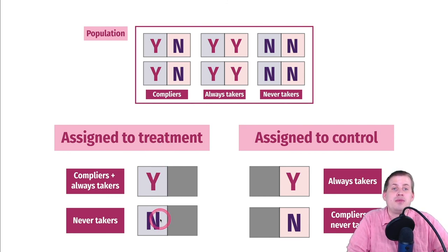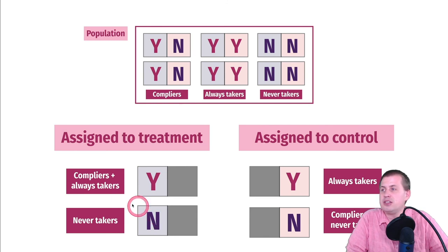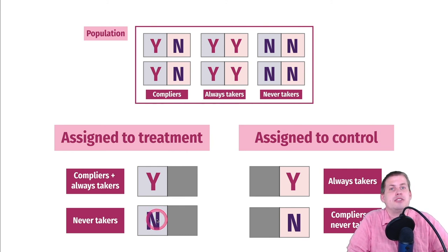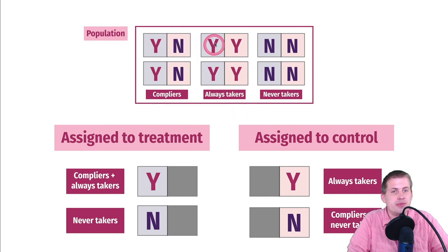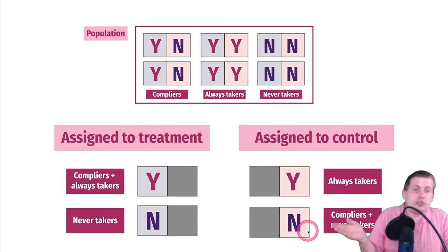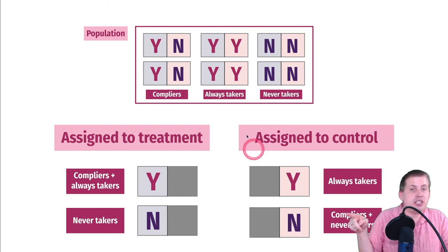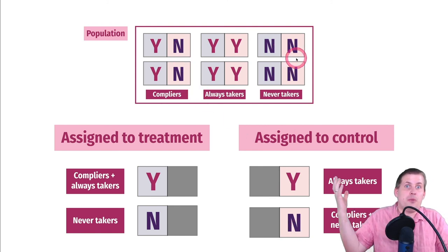If assigned to treatment and you don't do it, the only possibility is that you're a never taker — ignoring defiers. If assigned to control and you do it, you're guaranteed to be an always taker. If assigned to control and you don't do it, you could be a complier or a never taker, and we don't know which. Compliers are always wrapped up with another group: in the control group with never takers, and in the treatment group with always takers.